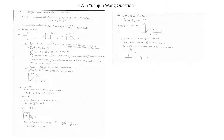For 1 < z ≤ 2, Fz(z) = z²/2 - 2(z-1)²/2, which equals -z²/2 + 2z - 1. So fz(z), the derivative of that, equals -z + 2.